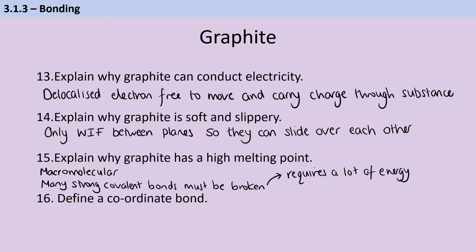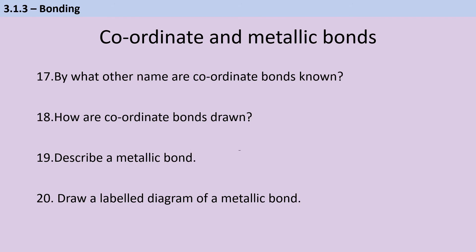A coordinate bond is a covalent bond, so a shared pair of electrons, where both of those electrons have come from one atom. Coordinate bonds are also known as dative covalent bonds. And in order to draw them, we do an arrow rather than just a line. And the arrow goes from the atom that's donating that pair to the atom that is sort of receiving it or the second atom that's participating in that bond.